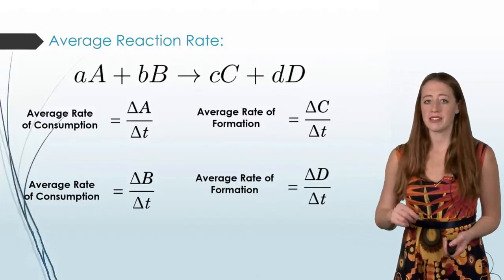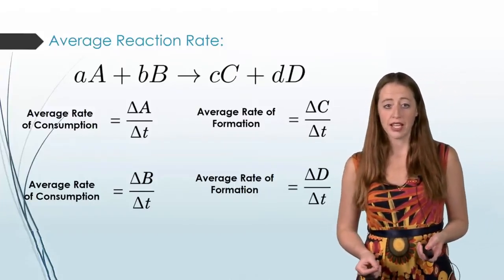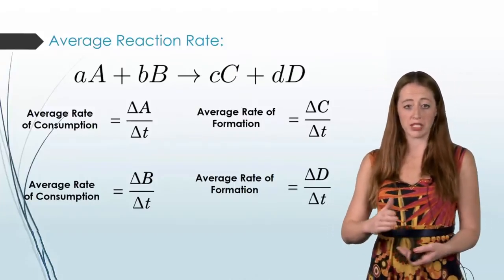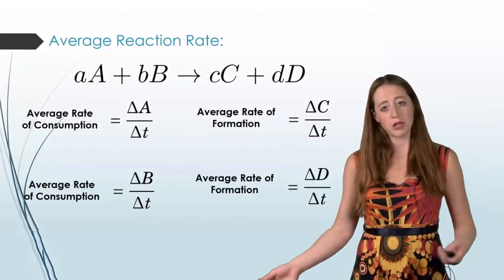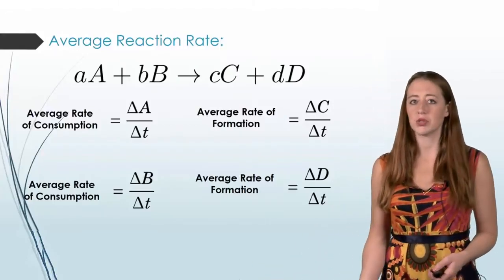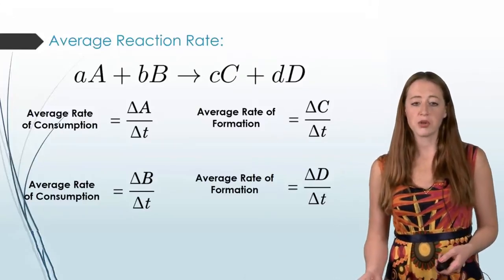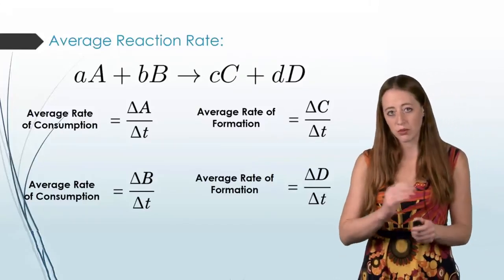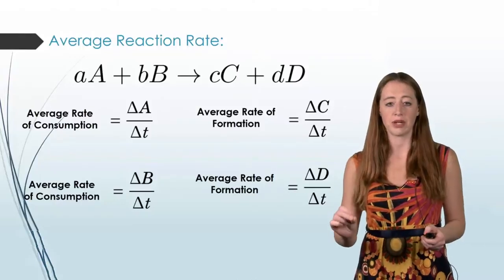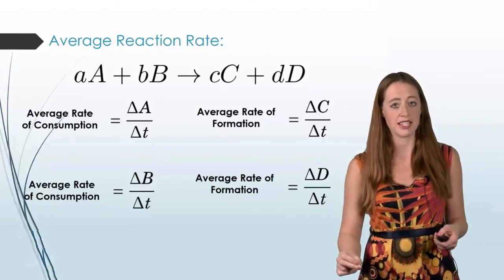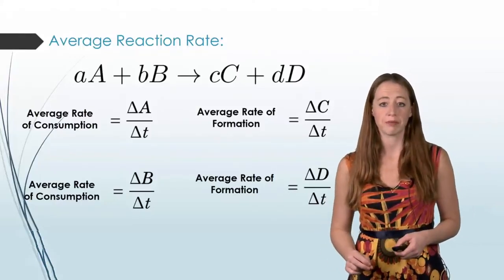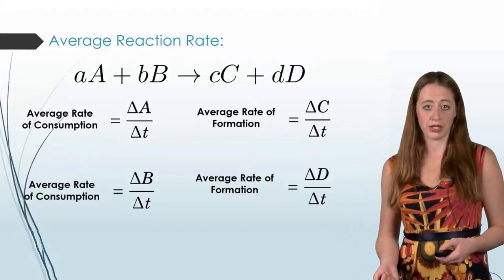And the problem with this is that these could all be different. If everything is a one to one to one to one ratio, well they would all be the same. But that's not generally true when we're talking about equations. And so it would be nice if we just had one thing that we could talk about. That if we said the rate of the reaction is this, we would know what we were talking about. And that's what unique reaction rate is.